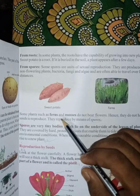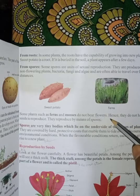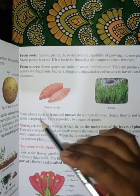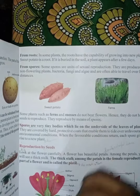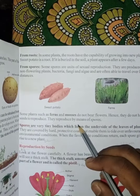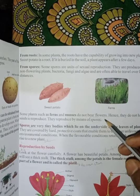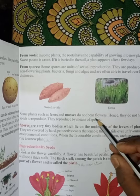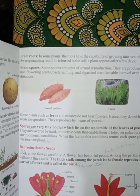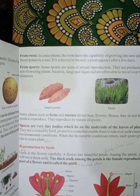Some plants such as ferns and mosses do not bear flowers. Hence, they do not have seeds to produce. They reproduce by means of spores. By the help of spores, they are growing new plants.